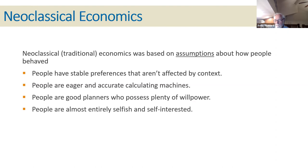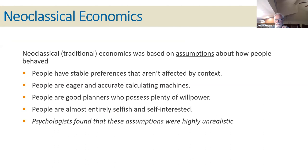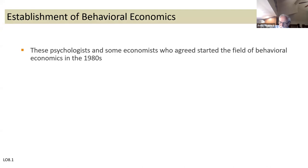Traditional economics assumed that people are almost entirely selfish — they're looking out for number one. And the assumption was that if everybody was selfish and looked out for themselves, the whole society would benefit. That's one of the bases of traditional capitalistic thinking, and the rise of alternative ways of thinking such as communism or socialism attacked that idea. Psychologists — not economists — found that these assumptions were highly unrealistic. They didn't think real people behaved this way. These psychologists and some economists who started agreeing with them started the field of behavioral economics.